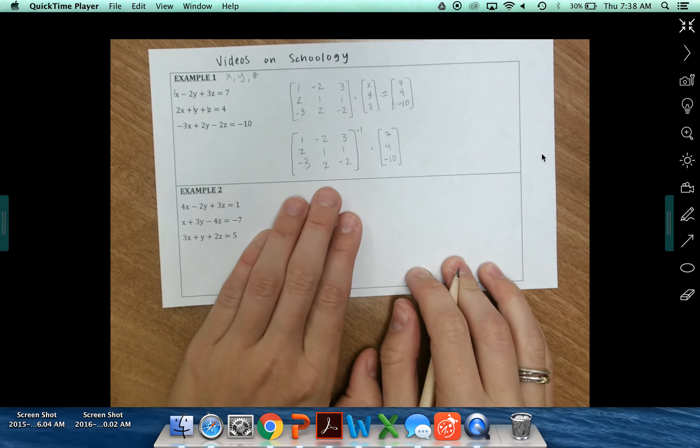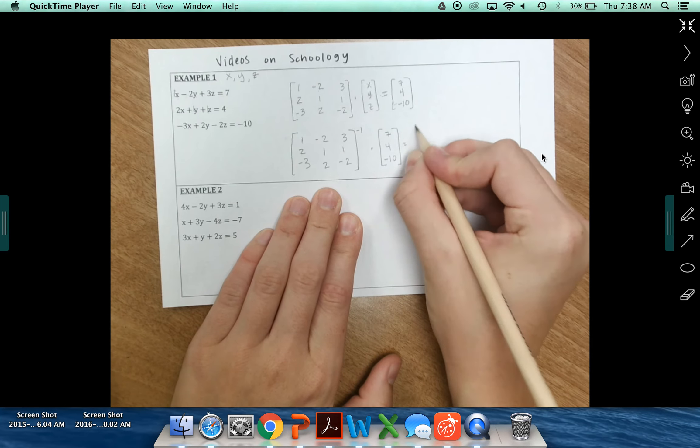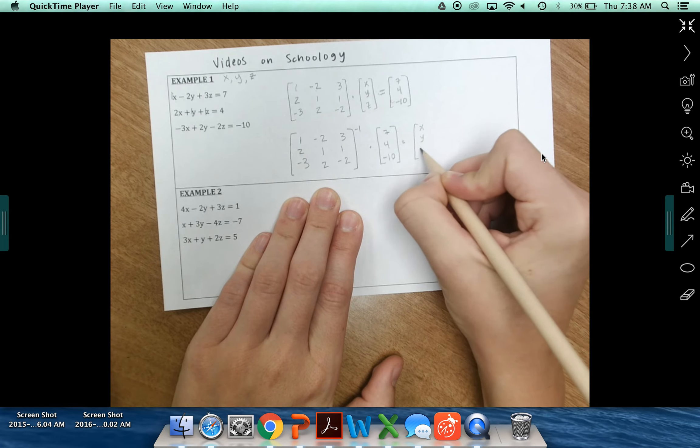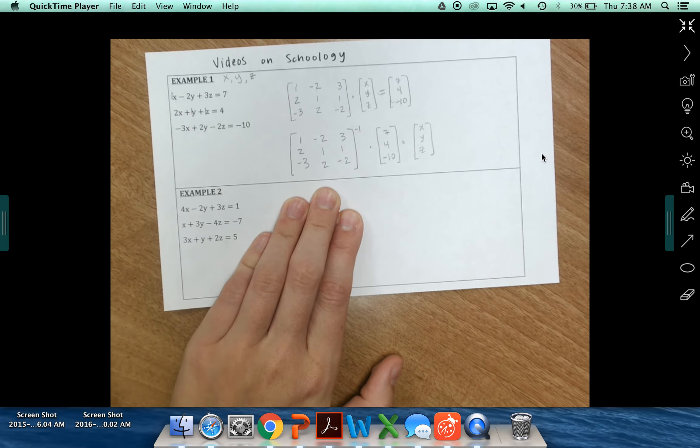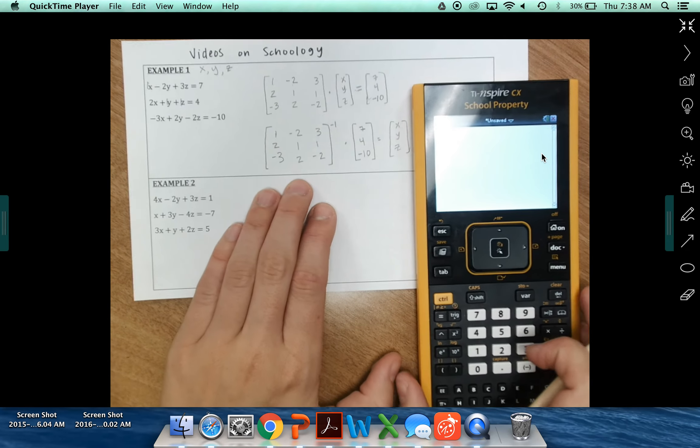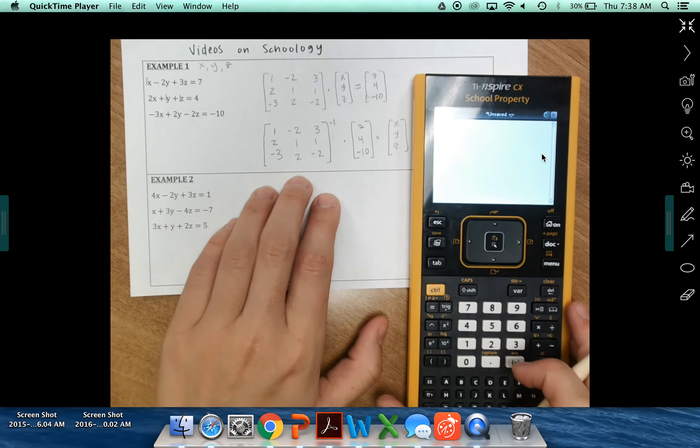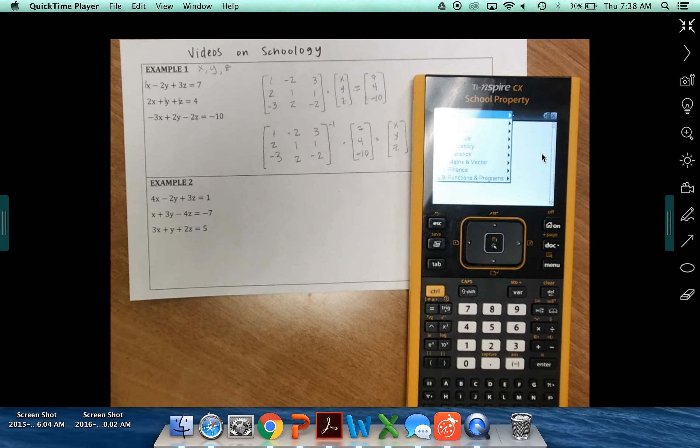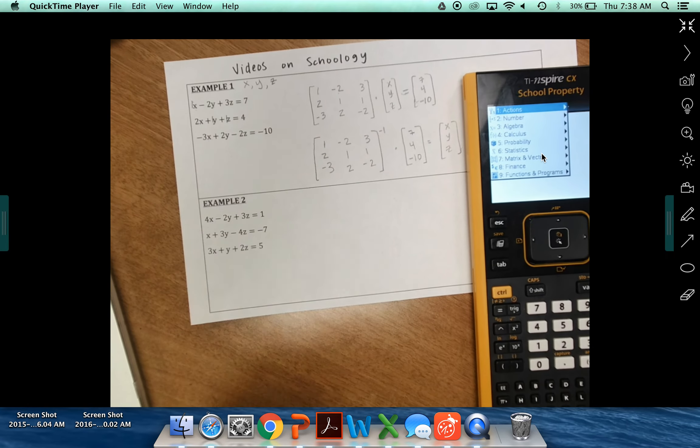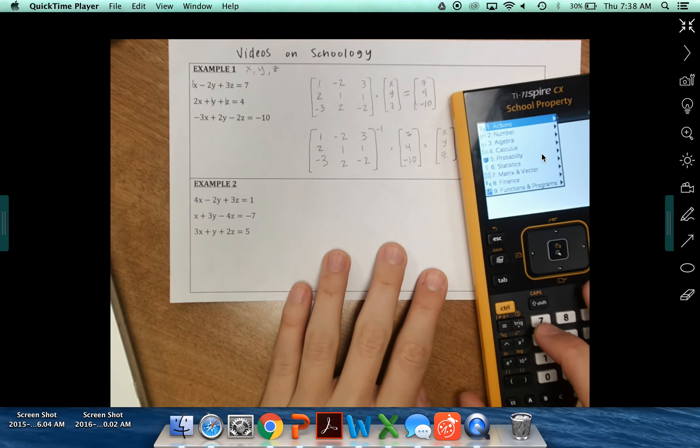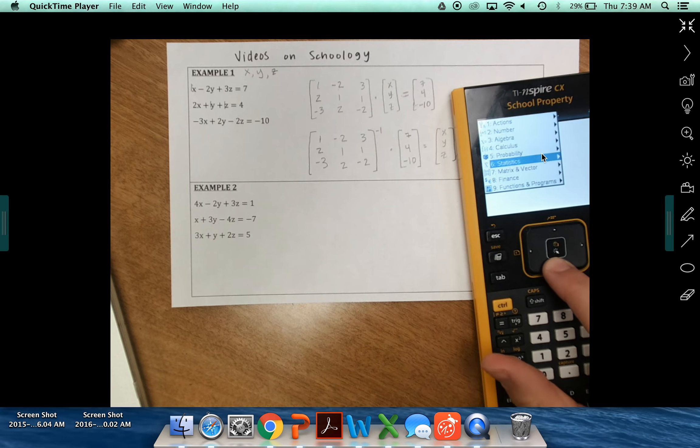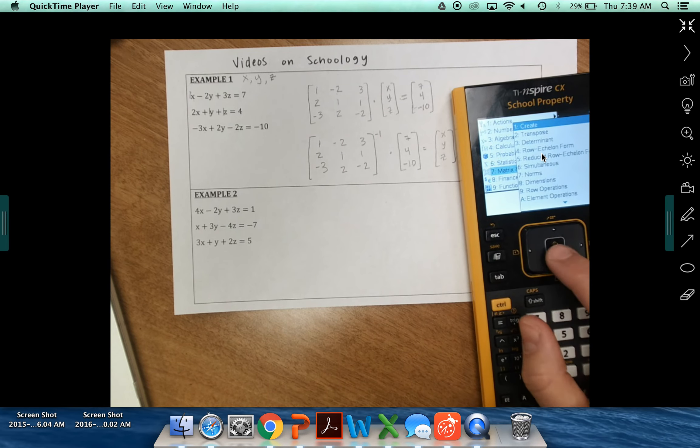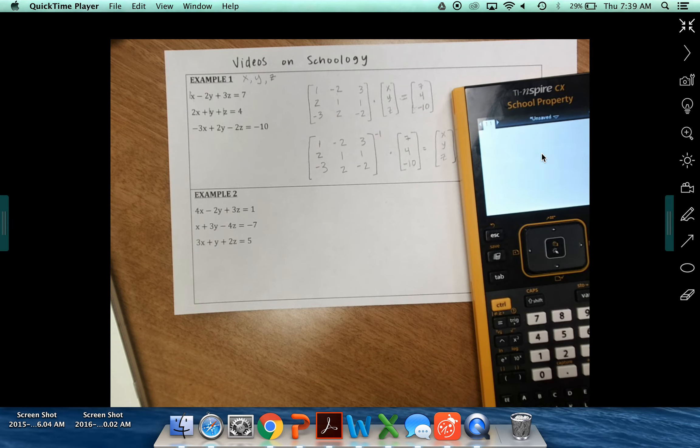Okay? So to plug that into our calculator, that's actually going to give us our X, Y, and Z values over here. So it'll give us X, Y, and Z in that order. So on your calculator, on a blank calculator screen, you're going to go to menu. So you'll go down to, go to menu, down to number 7, matrix and vector. You're going to go to 1, which is create. And then we're creating a matrix. So 1.